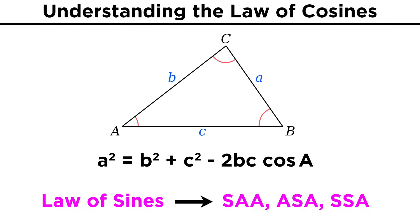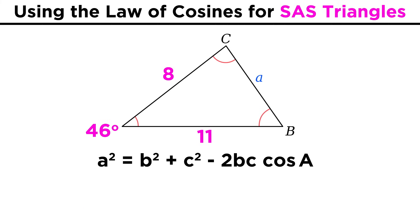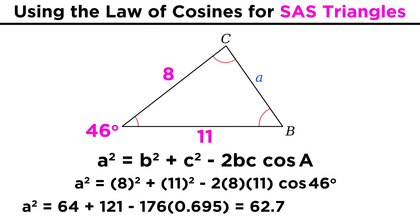While the law of sines allowed us to solve side angle angle, angle side angle, and side side angle triangles, now with the law of cosines we can solve side angle side triangles. Take this one for example. We've got our two sides and the angle between them known, so let's plug everything into the equation, simplify a little bit, and there's our value for the third side.